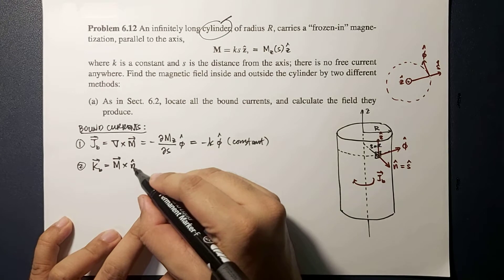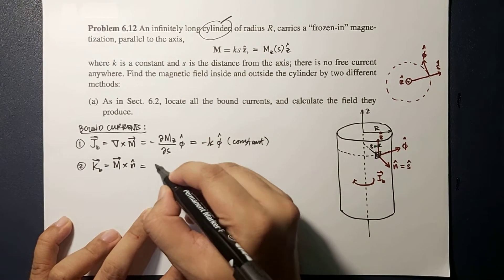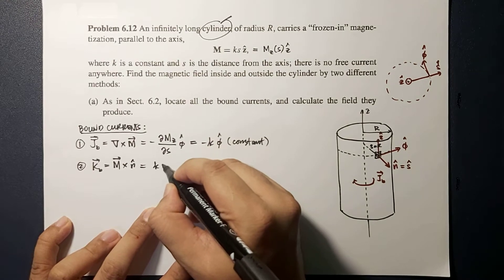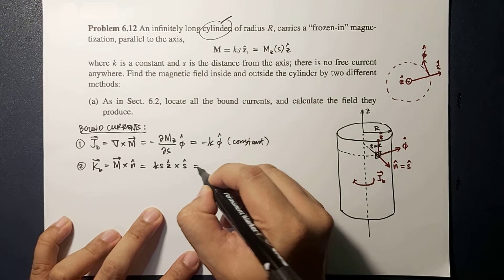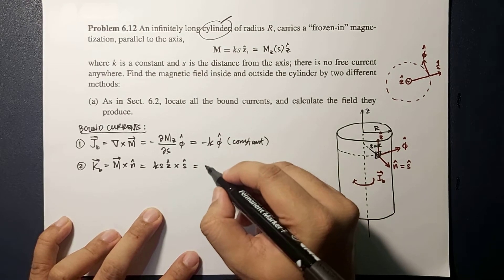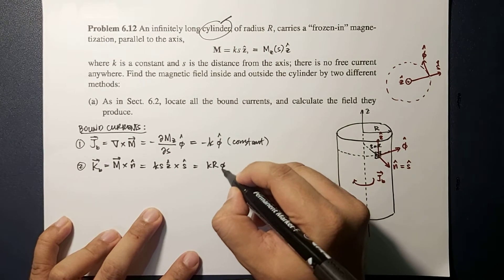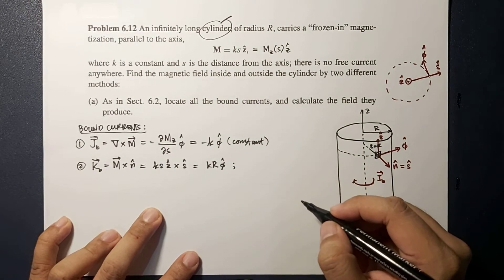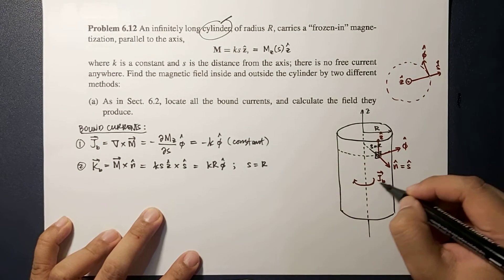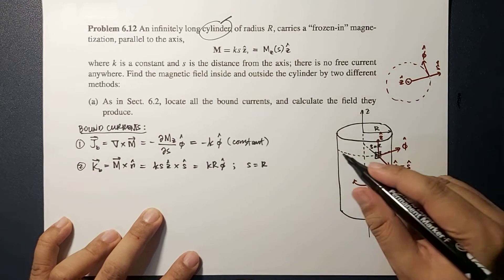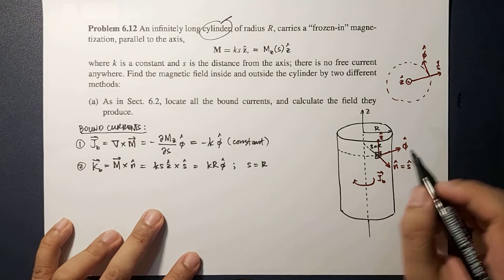Because our N hat is along the S component, this becomes KS Z hat cross S hat, and this is equal to KR φ hat. Here we already set S to be R because we're looking at the surface of your cylinder. At the surface of your cylinder, S is equal to R.